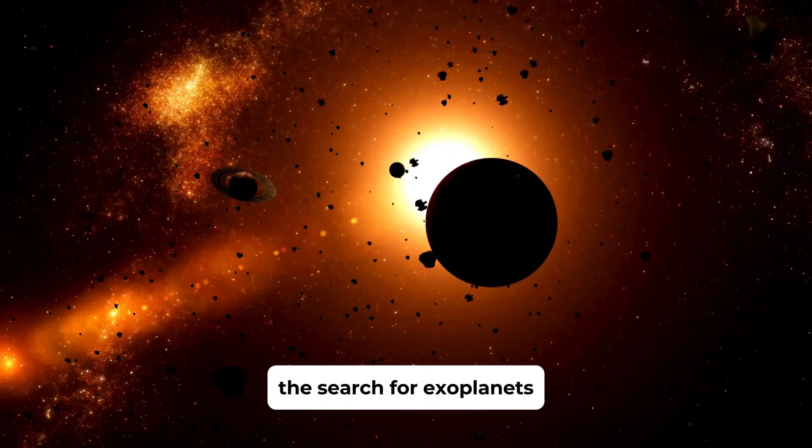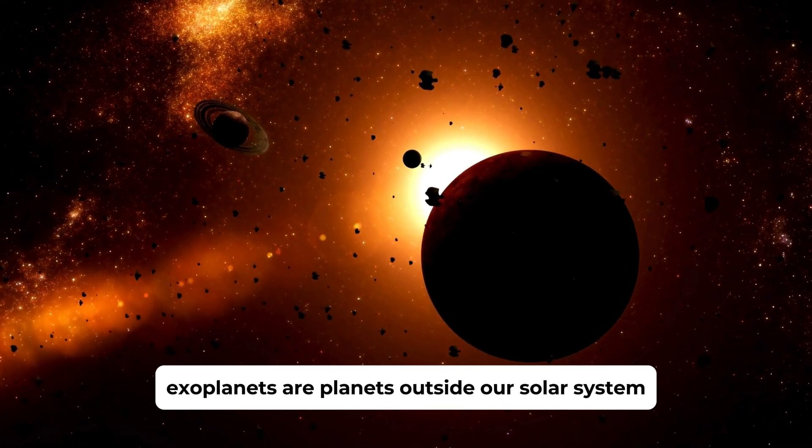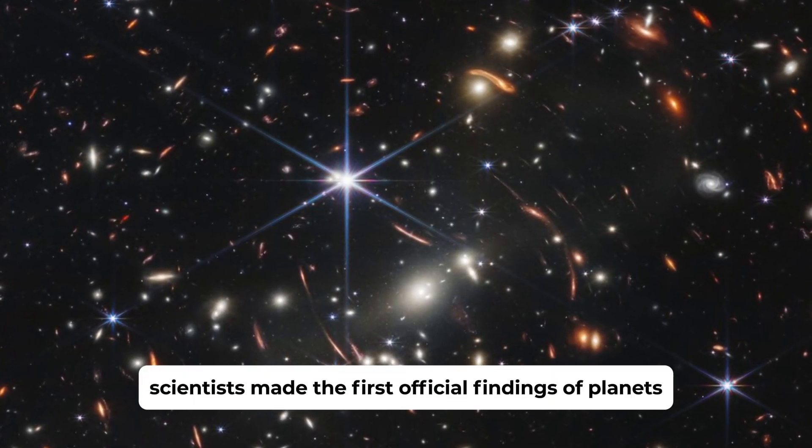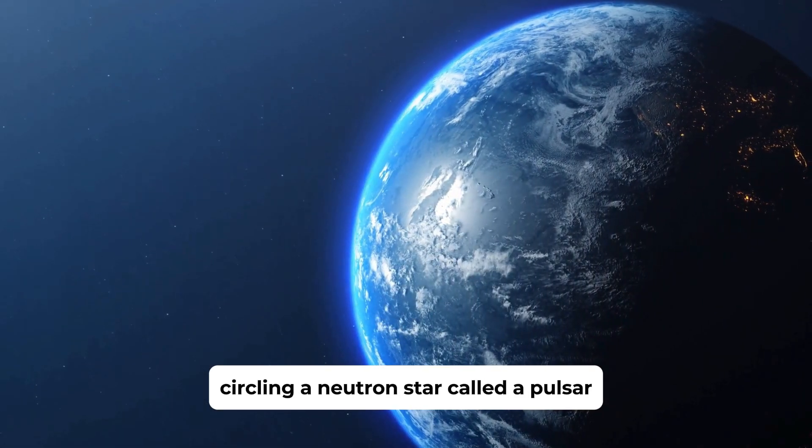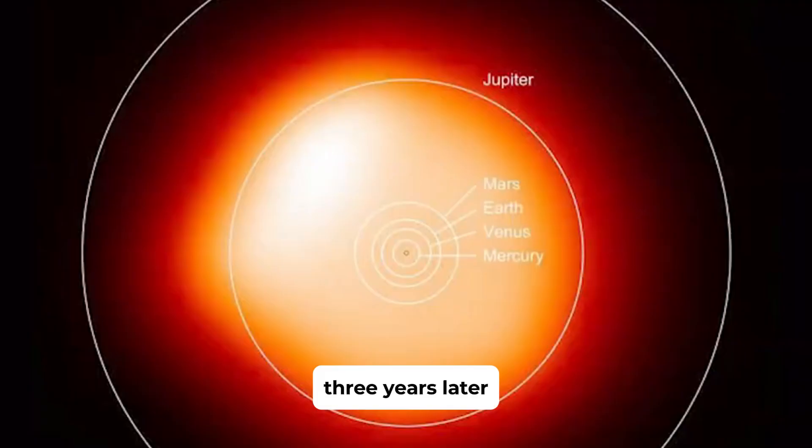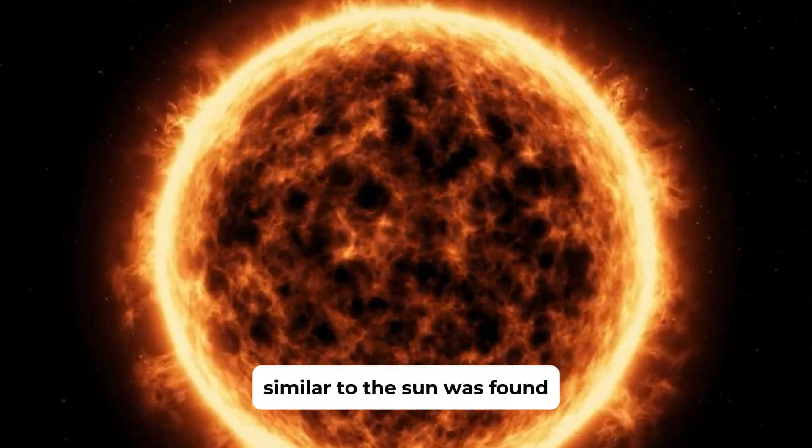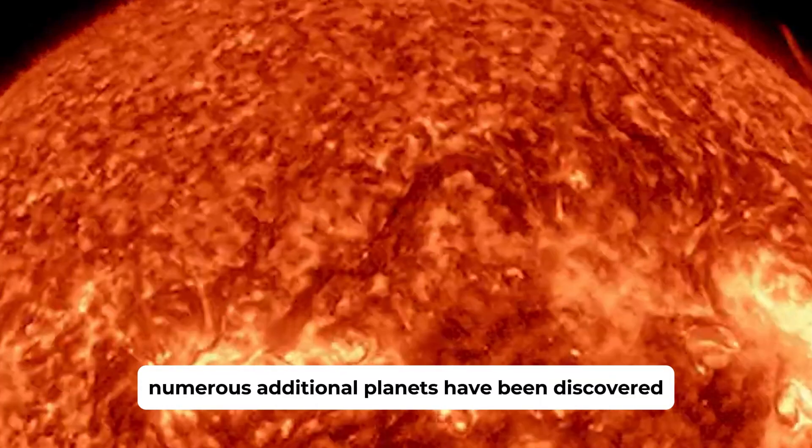The Search for Exoplanets. Exoplanets are planets outside our solar system, and thousands have already been discovered. In 1992, scientists made the first official findings of planets circling a neutron star, called a pulsar. Three years later, the first planet revolving around a star similar to the Sun was found. Since then, numerous additional planets have been discovered, including several Earth-sized worlds within the habitable zones of their stars.